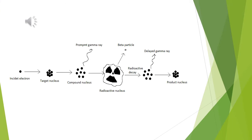Neutron activation analysis, or NAA for short, involves a process by which a target nucleus of interest is excited by an incident neutron. The target nucleus emits a prompt gamma ray and a radioactive nucleus is formed. The radioactive nucleus emits a beta particle and undergoes radioactive decay, then emits a gamma ray to form a product nucleus.